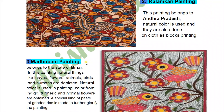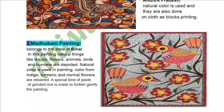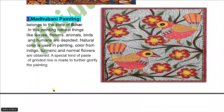Number 3: Madhubani Painting, belongs to the state of Bihar. In this painting, natural things like leaves, flowers, animals, birds and humans are depicted. Natural color is used. Colors from indigo, turmeric and natural flowers are obtained. A special kind of paste or ground rice is made to further glorify the painting.